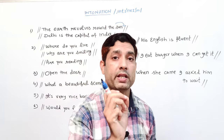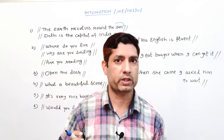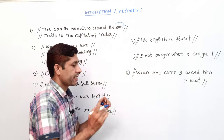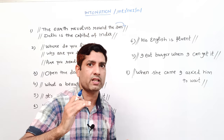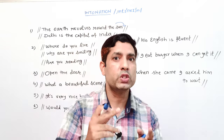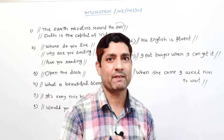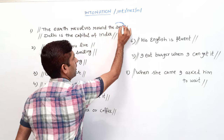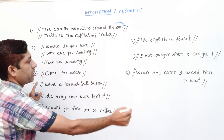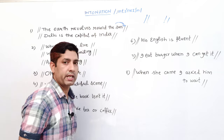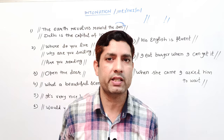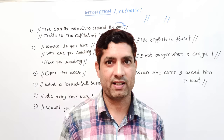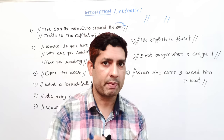हमारे group का एक nucleus या tonic syllable होता है जिसके ऊपर हमारी pitch change होती है और stress होता है। यदि sentence में कोई intention word है जिसे हम change करना चाहते हैं तो उस पर nucleus जाता है, otherwise जो last syllable है उस पर nucleus जाता है। जैसे 'the earth revolves around the sun' में falling tone 'sun' के ऊपर आती है। मैंने sentences में slash लगाया है, punctuation mark नहीं, क्योंकि intonation speaking का part है, writing का नहीं।